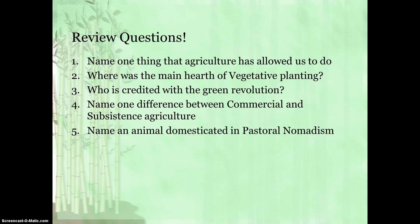Now here are some review questions. Get out a piece of paper, or remember it in your head if you're that good. Question number one: name one thing that agriculture has allowed us to do. Question number two: where was the main hearth of vegetative planting? Question number three: who was credited with the Green Revolution? Question number four: name one difference between commercial and subsistence agriculture — there are many, so just put down one. And last but not least, question five: name an animal commonly domesticated in pastoral nomadism.